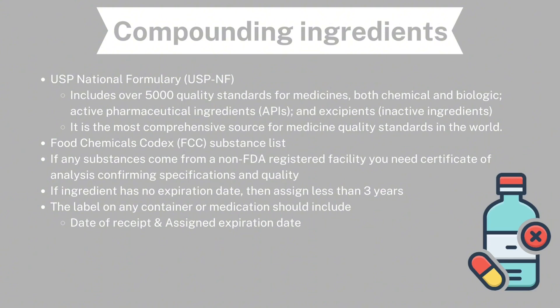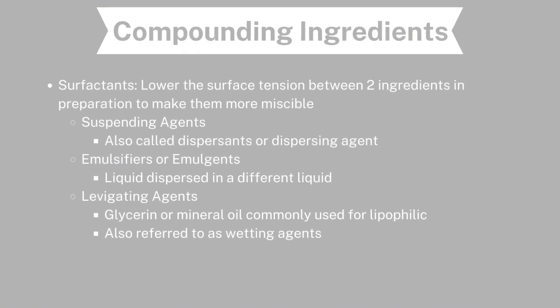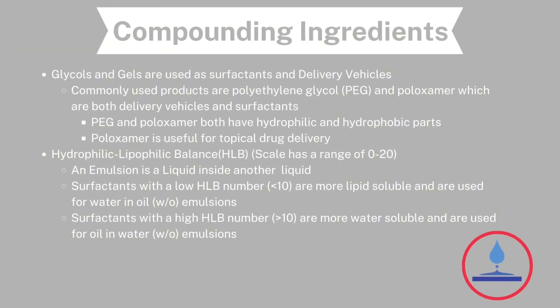Surfactants are used to lower the surface tension between two ingredients in a preparation to make them more miscible. Suspending agents are also called dispersants or dispersing agents. There are also emulsifiers, also known as emulgents, which involve a liquid dispersed in a different liquid. There are levigating agents, which include glycerin or mineral oil, commonly used for lipophilicity — these are also known as wetting agents.